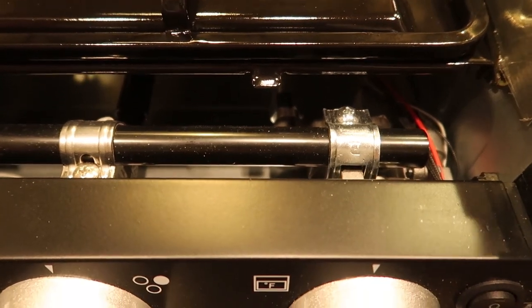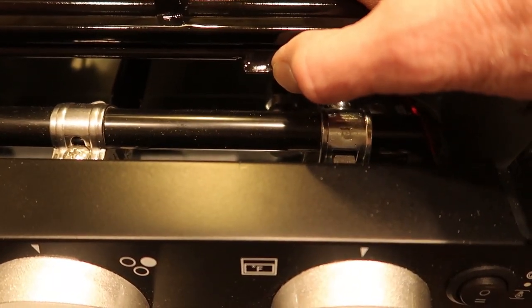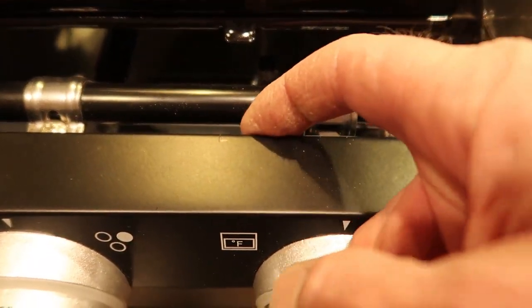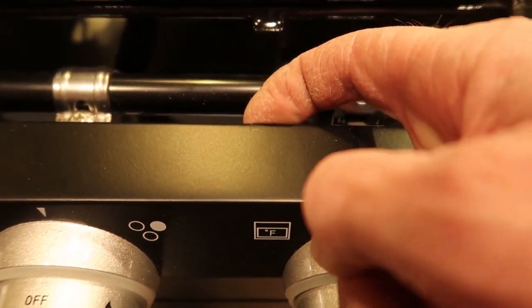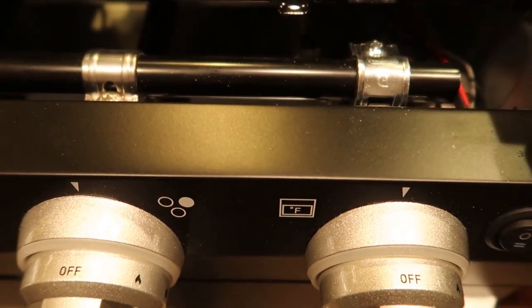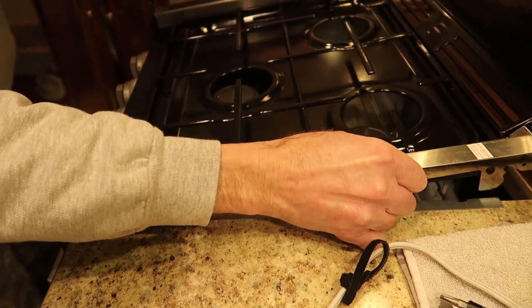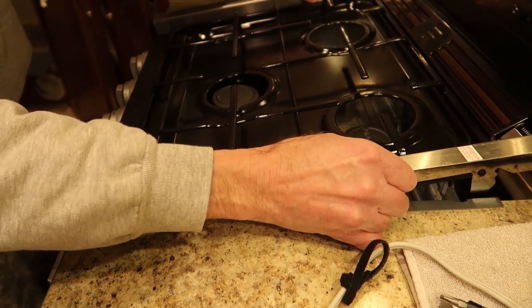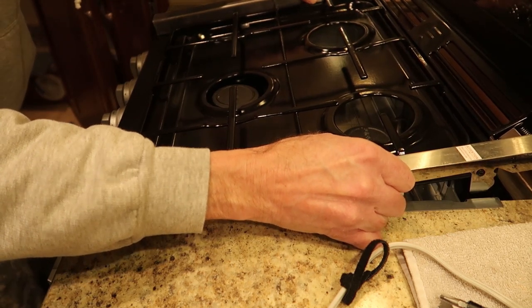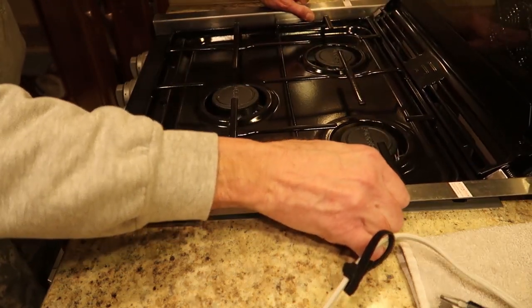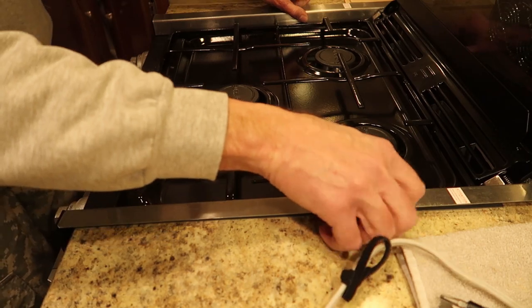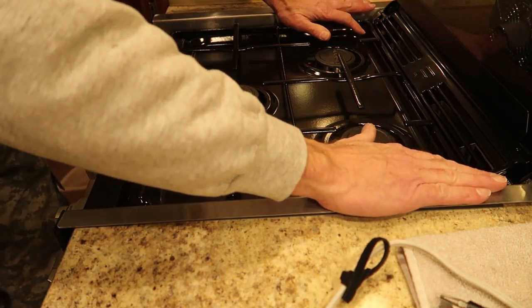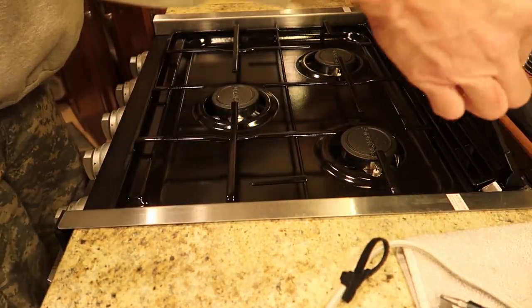On the front edge of the stove cover we have a little tab here on each side. Those tabs fit into a little notch right on the front lip. So we'll lift this up at a bit of an angle, line up those two front tabs in those notches, and then just sort of angle it down and push down on the back and it's dropped in place.